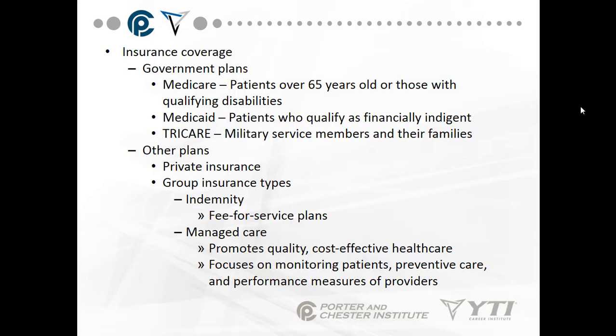Other plans include private insurance such as Blue Cross Blue Shield and UnitedHealthcare — there are many different types across the United States. We have group insurance types: indemnity, which are fee-for-service plans, and managed care. Most of us are on an HMO or a PPO. Managed care promotes quality, cost-effective healthcare and focuses on monitoring patients, preventive care, and performance measures of providers.